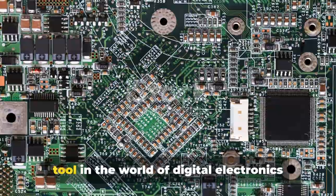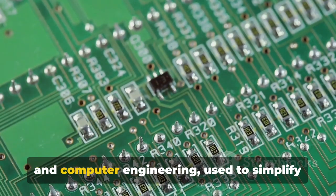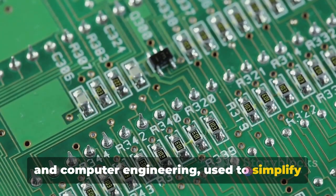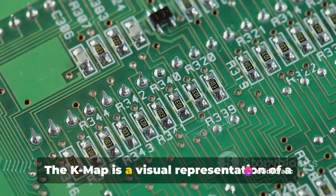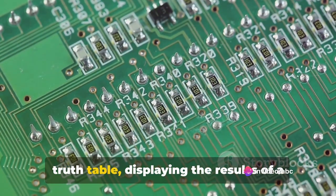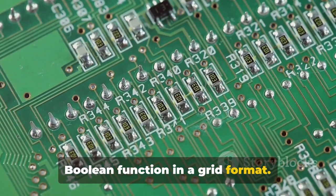These ingenious tables are an essential tool in the world of digital electronics and computer engineering, used to simplify Boolean functions and minimize logic gates. The K-Map is a visual representation of a truth table, displaying the results of a Boolean function in a grid format.